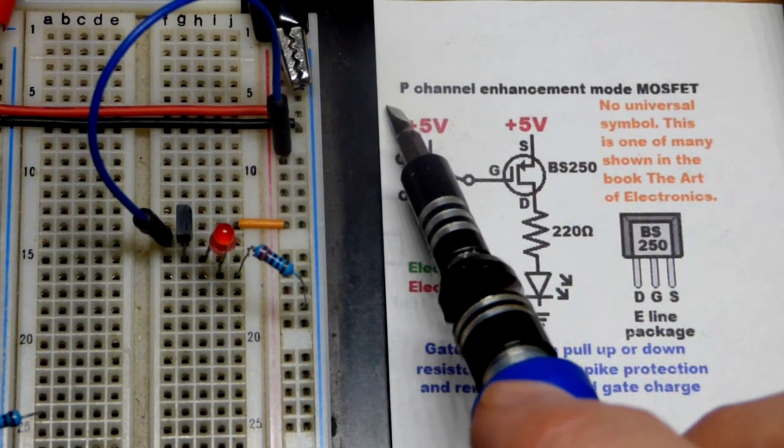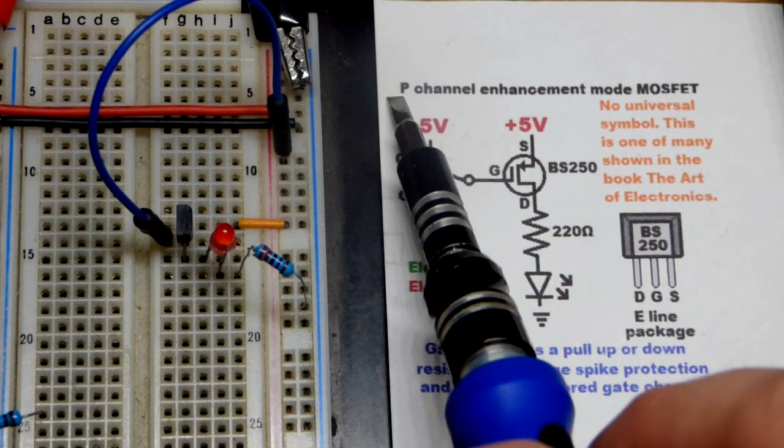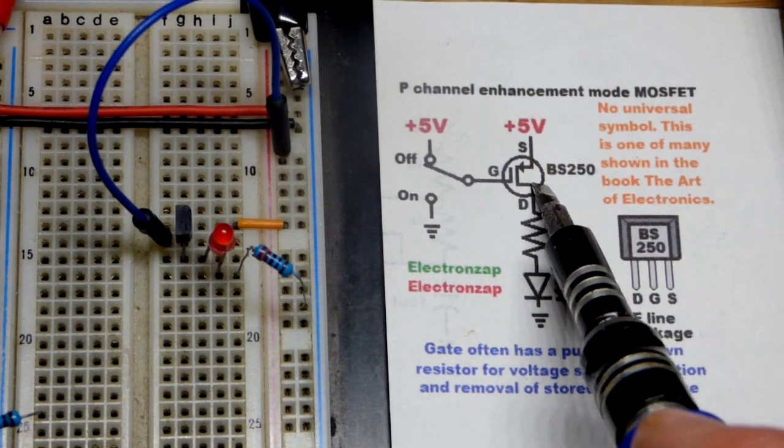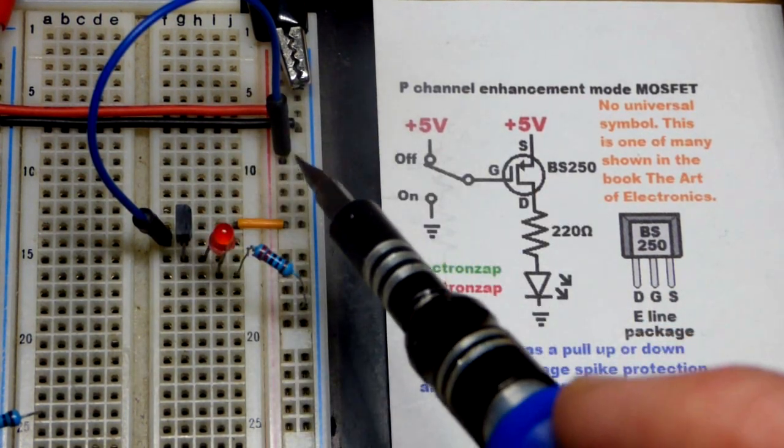So now in the last video we did the N-channel enhancement mode MOSFET. Now we're going to do the P-channel MOSFET. They work basically the same except polarities are opposite, so the control voltage is going to be opposite.